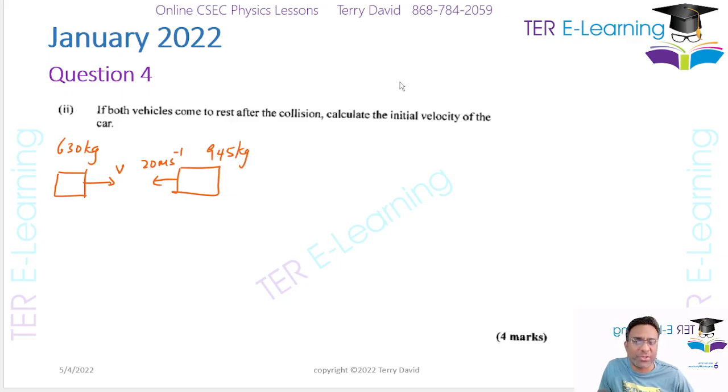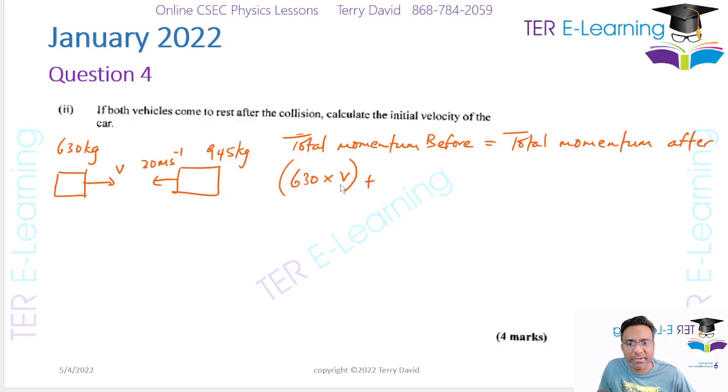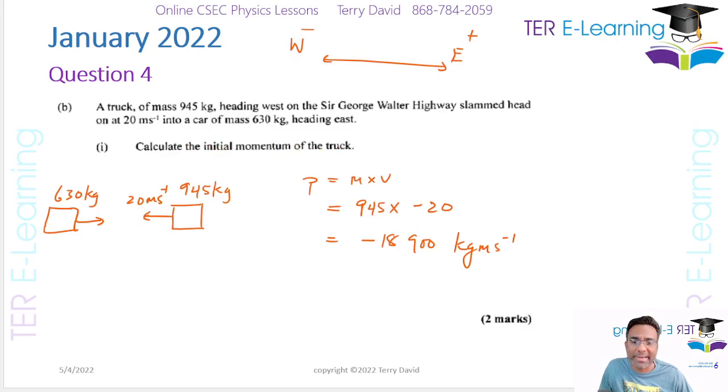So we're going to apply the principle of conservation of linear momentum. So your total momentum before is equal to the total momentum after. Now, your total momentum before, we have 630, this is the car, multiplied by V, we don't know what the velocity of the car is, plus we need to add the initial momentum of the truck. We worked out that already, so we can put minus 18,900.